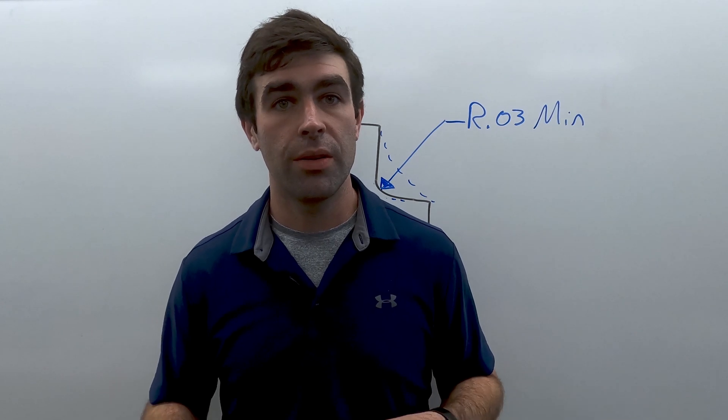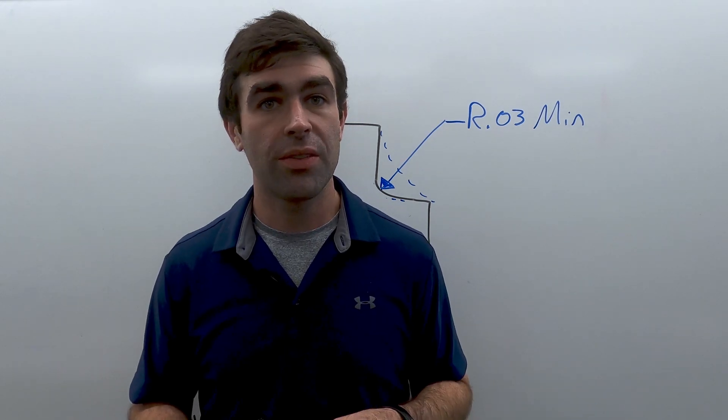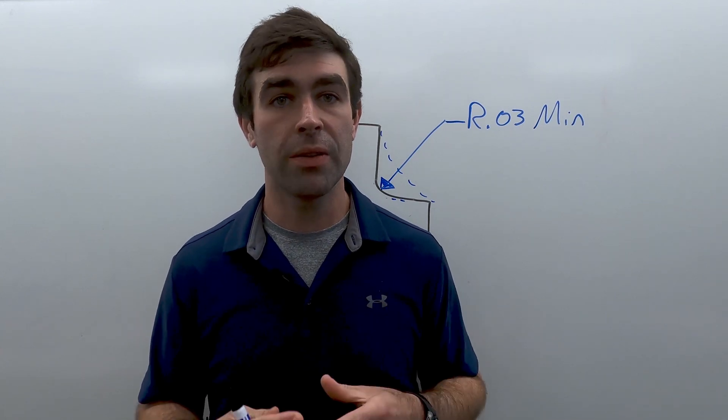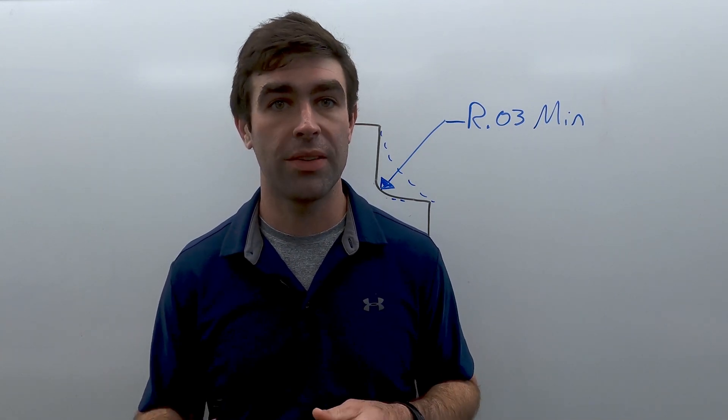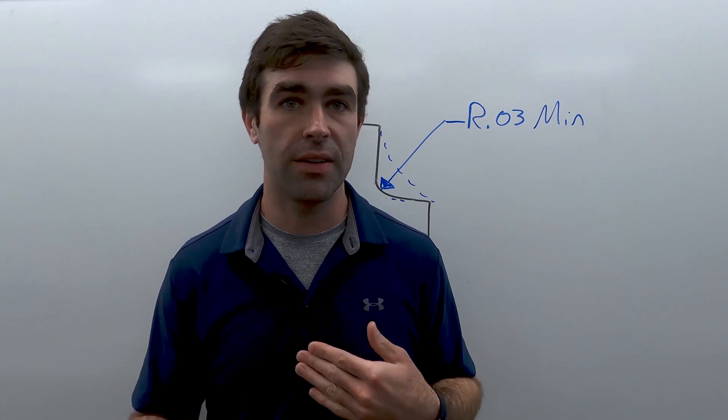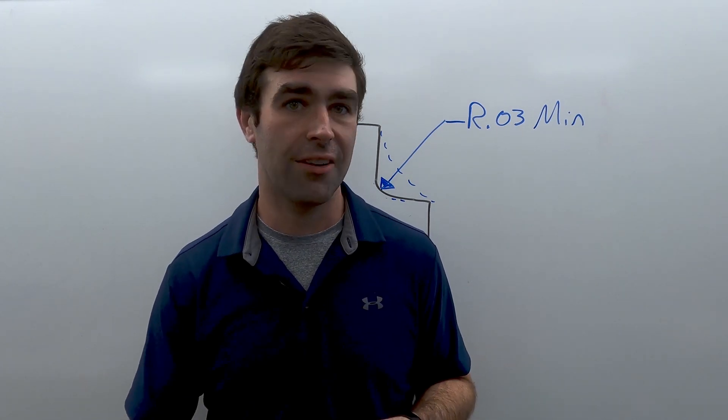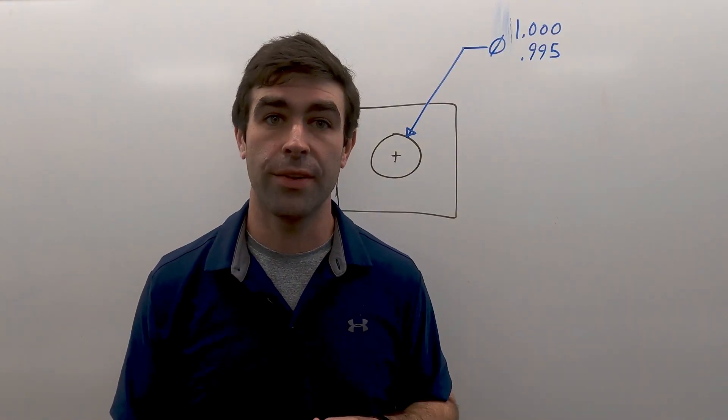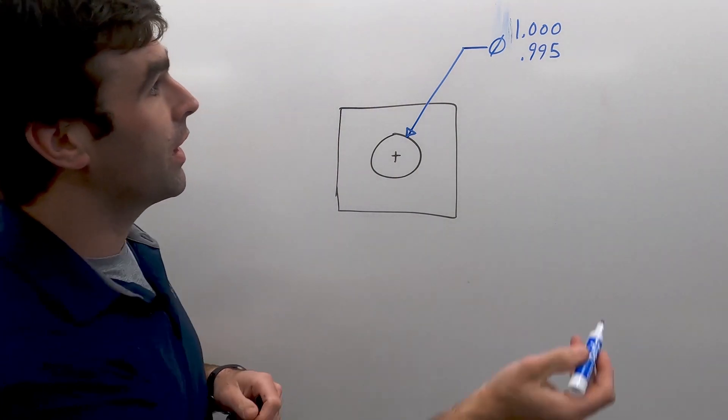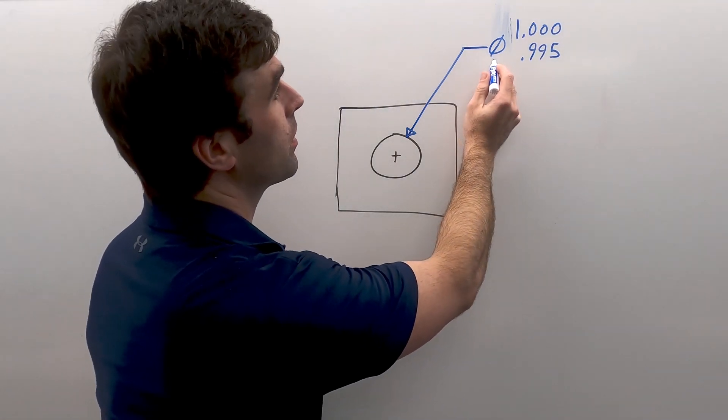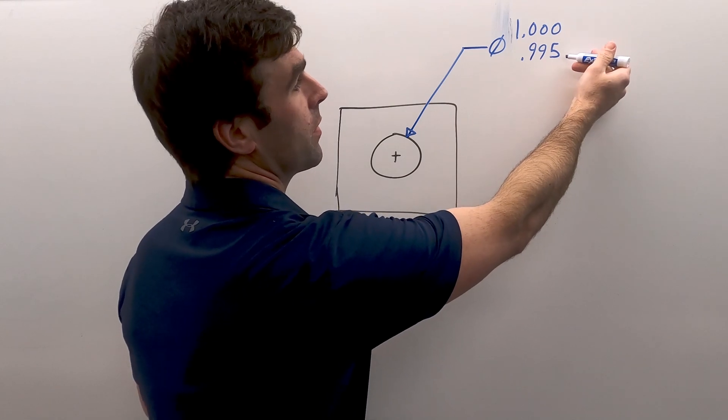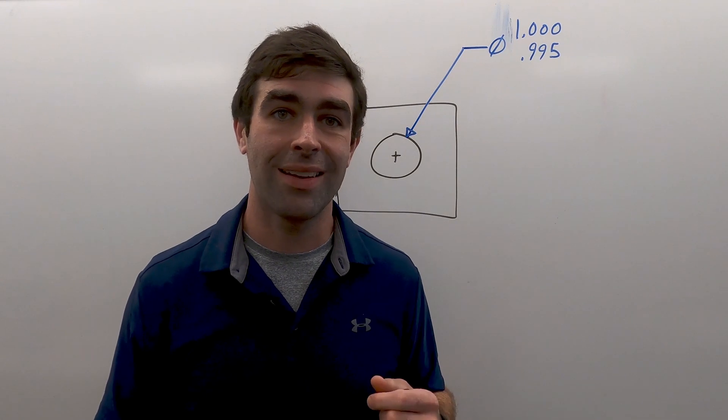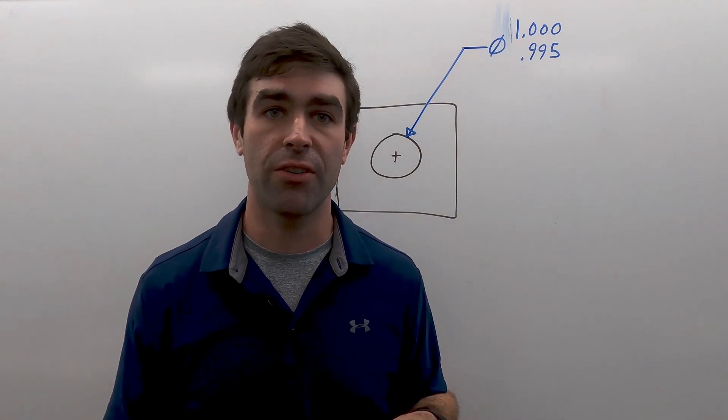Our next dimension are our limit dimensions. So these are on a lot of older drawings, but they're still applicable today. Typically, you see a limit dimension for something that has been sized for a fit. So think like a clearance fit or sliding fit or force fit. So a limit dimension will look like this for a hole or a cylinder. So we've got one diameter symbol. We've got the upper limit and the lower limit. So the hole can be as big as one inch or as small as 0.955 or 955 thou.